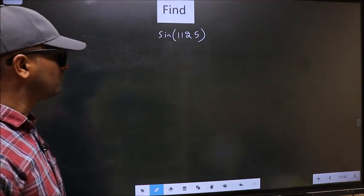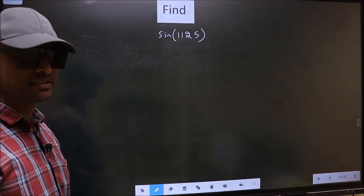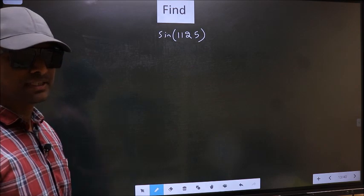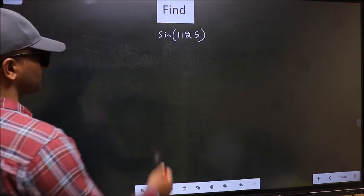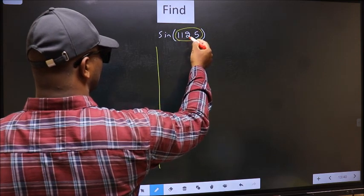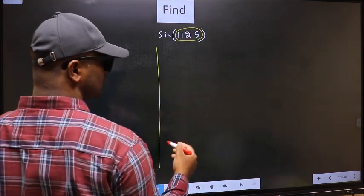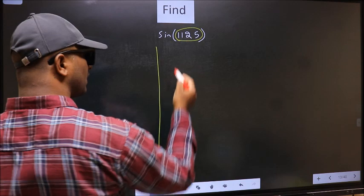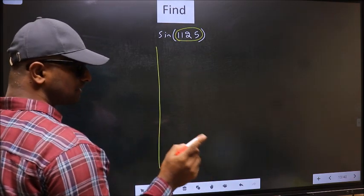Find sin(1125). To find this, we should follow this method. See, here we have 1125. Now you should check: 1125 lies between which two multiples of 180?